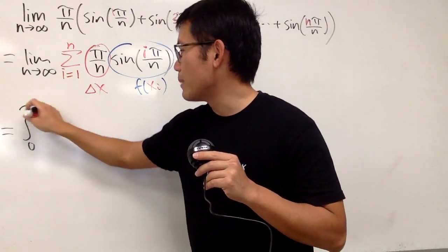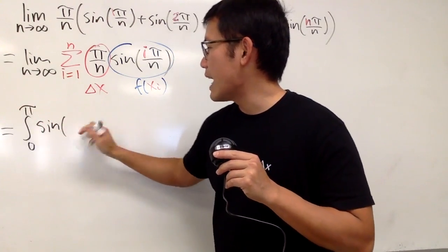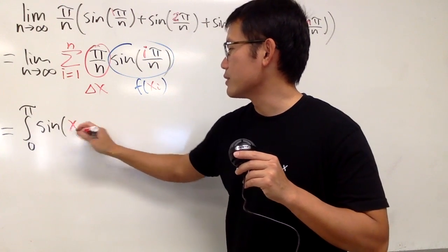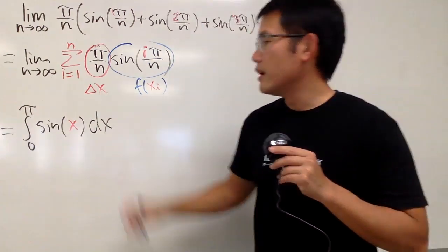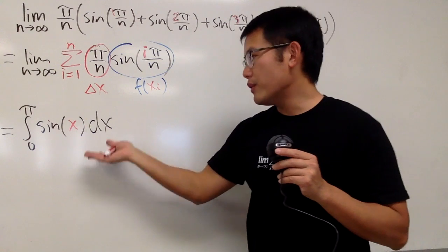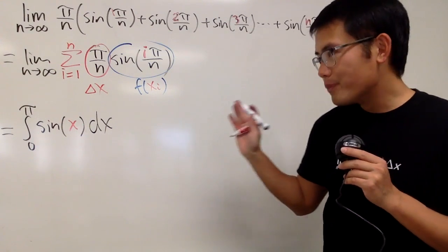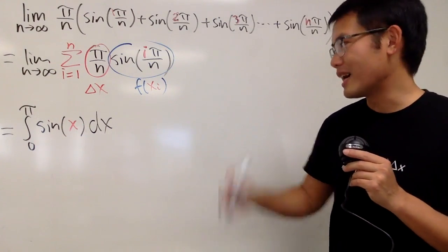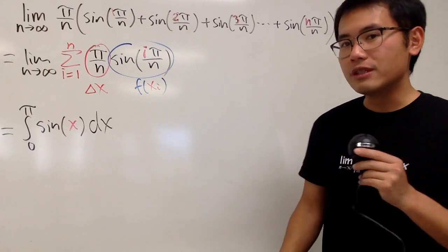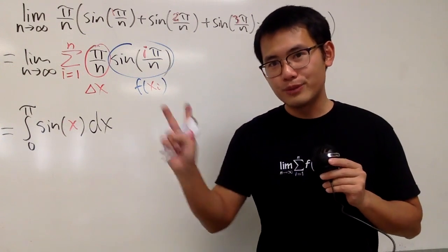We'll write this as the integral from 0 to π, and here we have our sin, and the input is just x, like this. Again, you can come with different answers, but this right here should be the most straightforward one, so just do that. And then, of course, we'll calculate this by using the fundamental theorem of calculus, part 2.